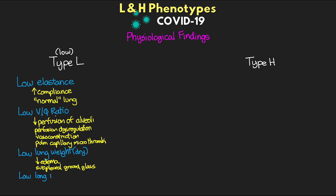Another feature of Type L is low lung weight — essentially dry lungs. Compared to typical ARDS or other pneumonias, we don't see the diffuse infiltrates and edema. On CT scan, there is a ground-glass appearance but confined to the subpleural tissue. Without that additional fluid seen in typical ARDS, there aren't those wet, heavy lungs — hence the low lung weight. Finally, there is low lung recruitability because of a low amount of non-aerated tissue, meaning alveoli and lung regions are largely open.